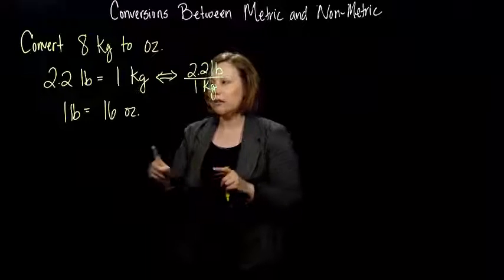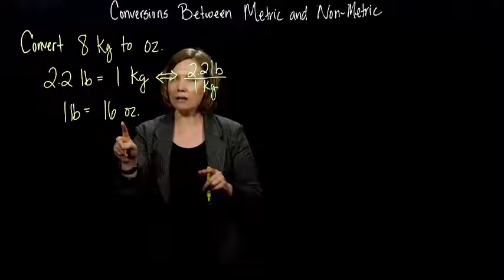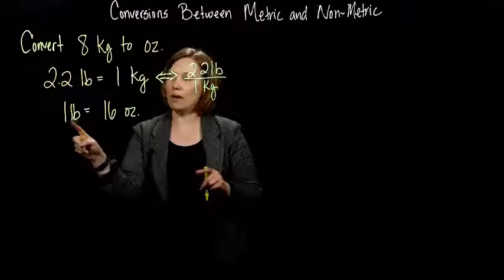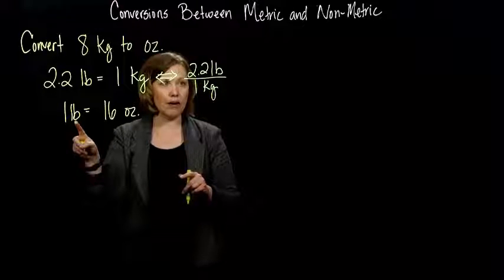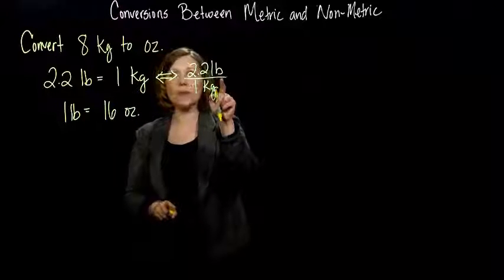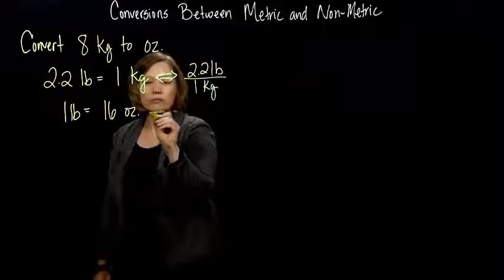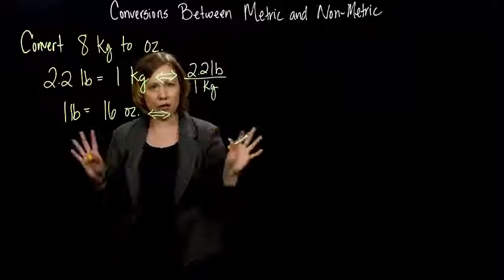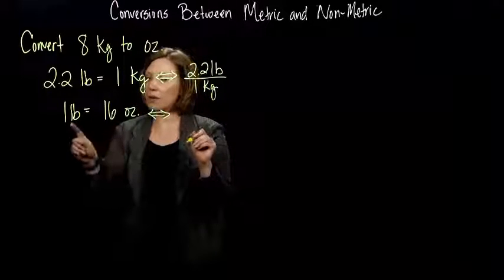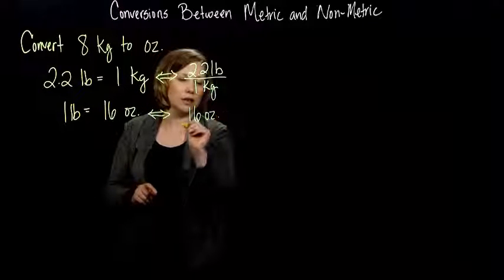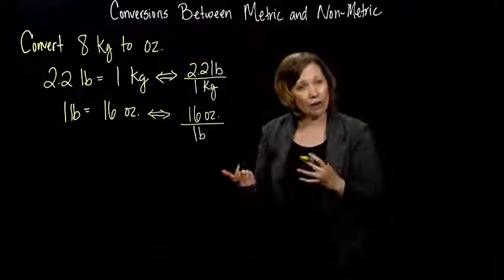I have that, and I can play the same game here. I want ounces to end up on the top. So I want to leave the ounces on the top, and I'm going to divide on both sides by pounds. Because if I multiply by this factor, the kilograms is going to cancel, leaving me with pounds. So if I divide on both sides by 1 pound, I have 16 ounces per pound.